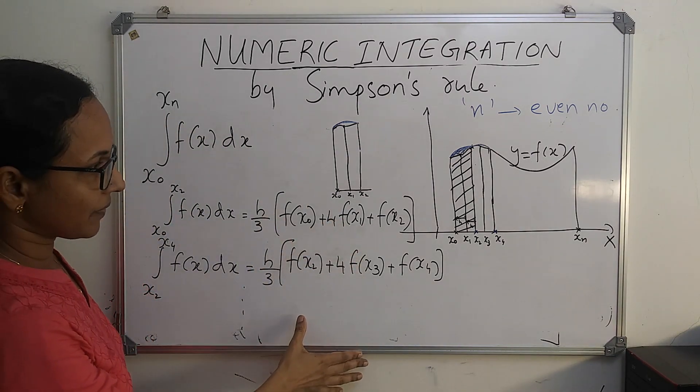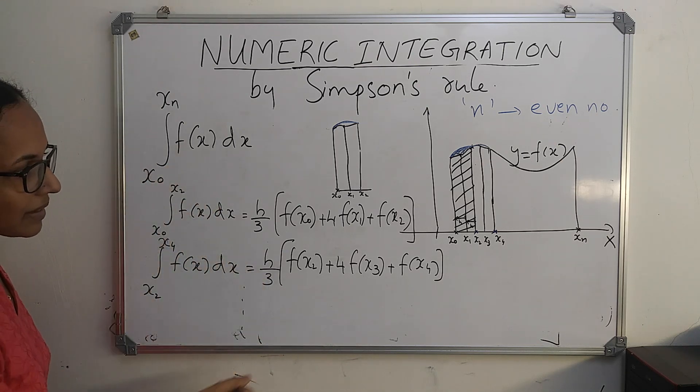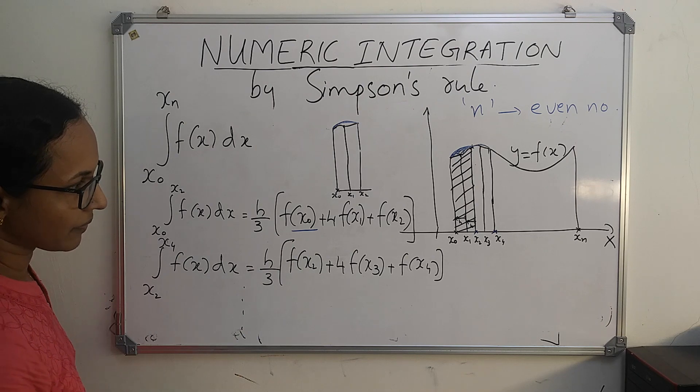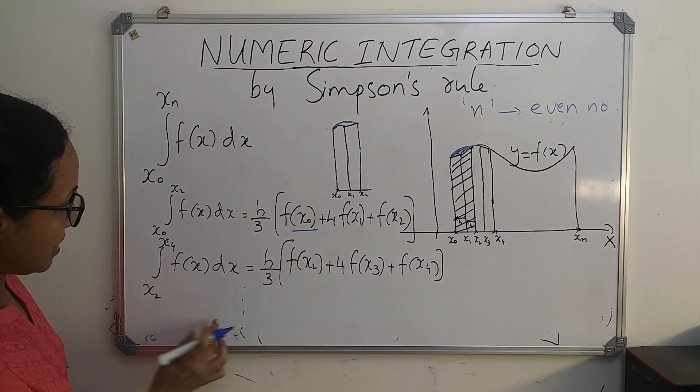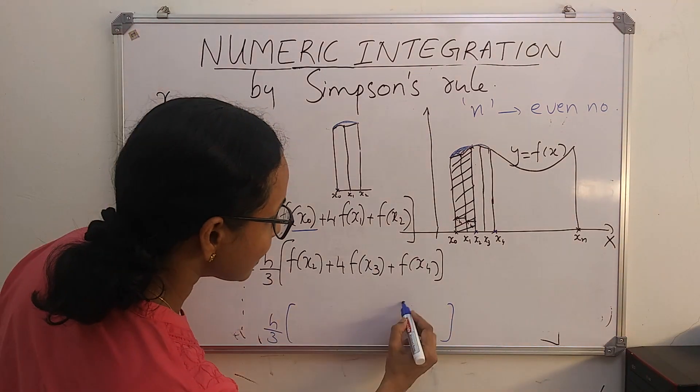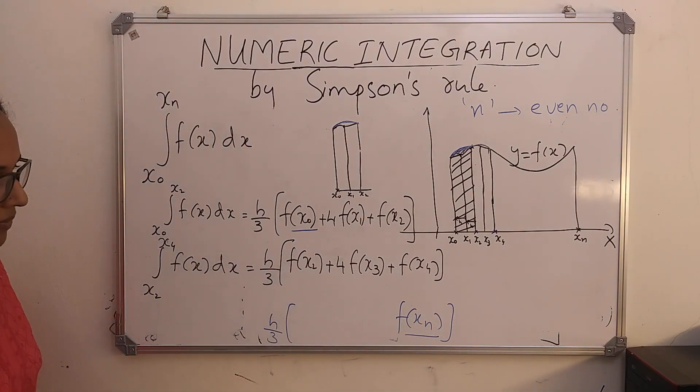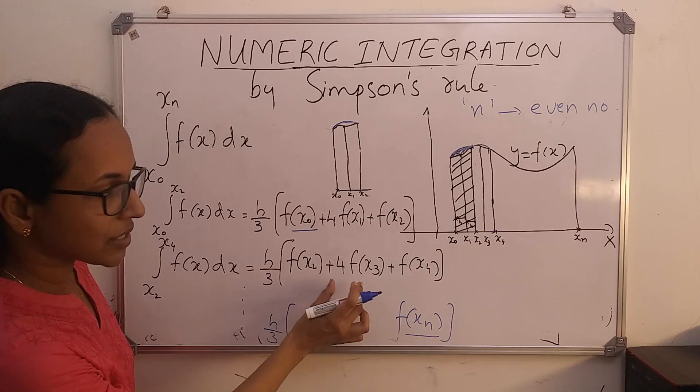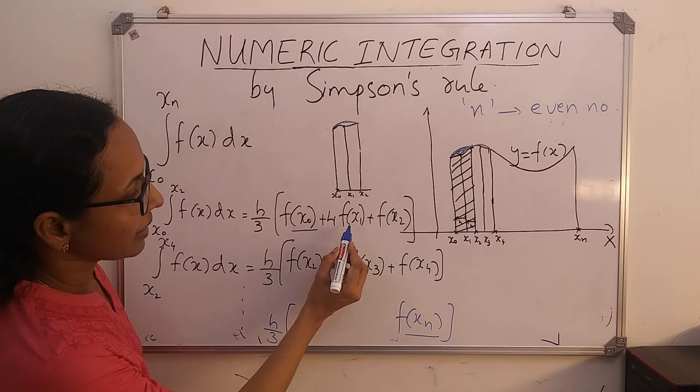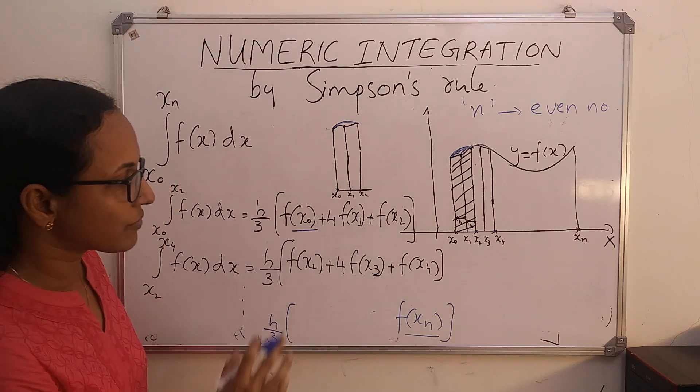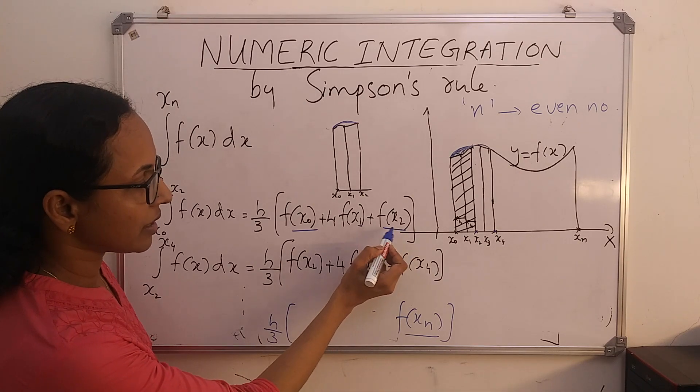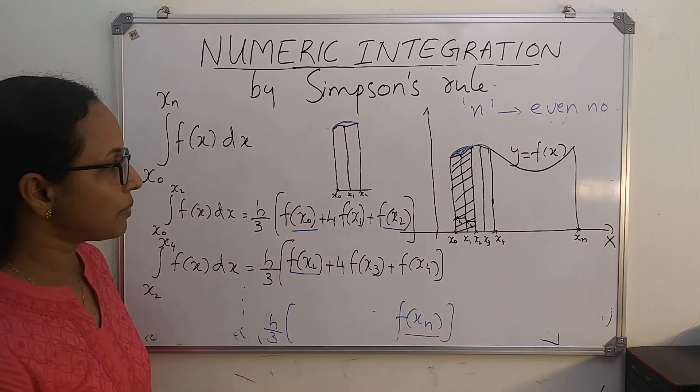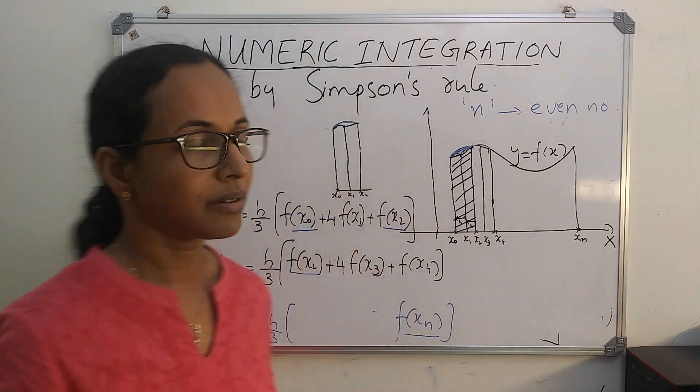After obtaining like this, the value of this integral will be sum of all these terms. You can see that f(x0) and f(xn) appear only once. But the middle terms appear four times: four times f of x1, four times f of x3, four times f of x5, and so on. All the odd suffix terms appear four times. And f(x2), f(x4) appear two times each. All even suffix terms appear two times.